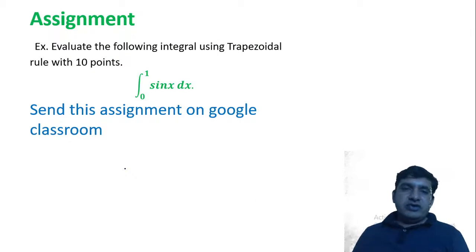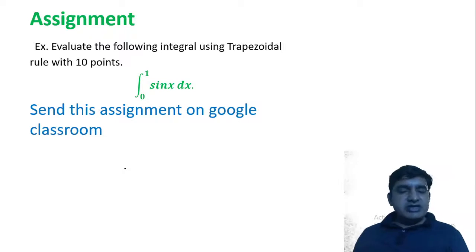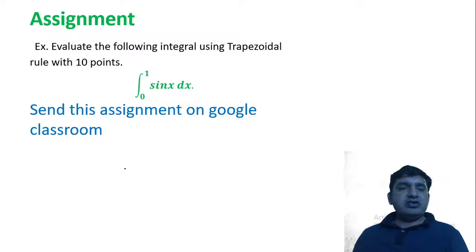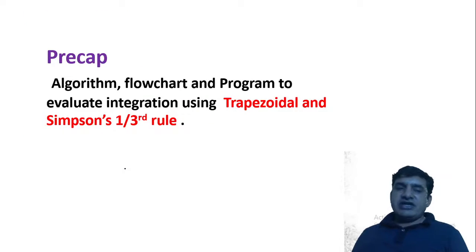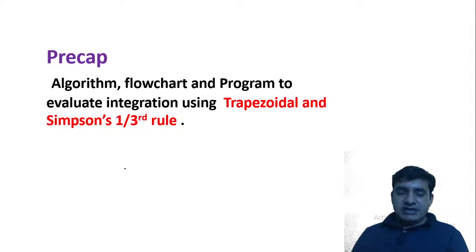Now you have an assignment: evaluate the following integral using the trapezoidal rule with 10 points — ∫₀¹ sin(x) dx. Solve this and send the assignment on Google Classroom. In the next lecture, we will see the algorithm, flowchart, and program to evaluate the integration using the trapezoidal and Simpson's one-third rule. Thank you.